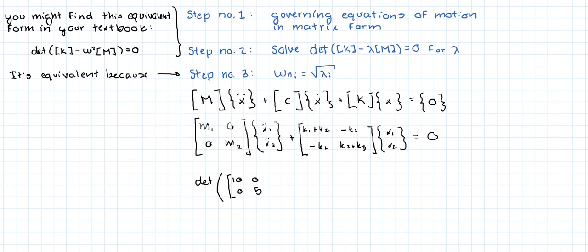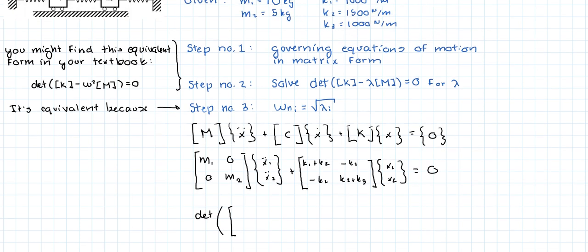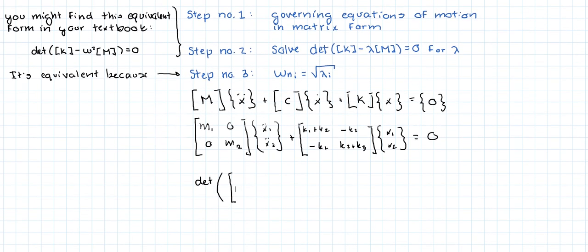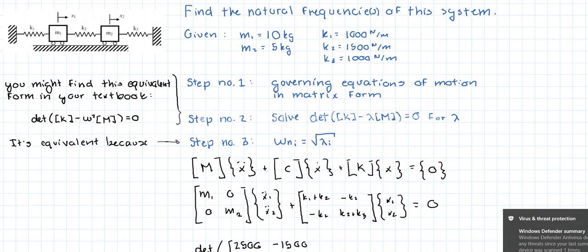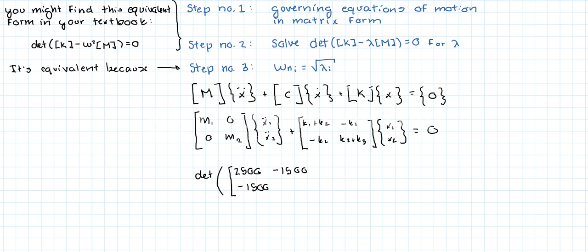Actually I made a little mistake. It's not the mass matrix. It's the stiffness matrix. K1 plus k2: K1 is 1000, K2 is 1500, so we get 2500. Minus k2 is minus 1500. It's symmetrical. And then we get k2 plus k3, so 1500 plus 1000 is 2500 again.